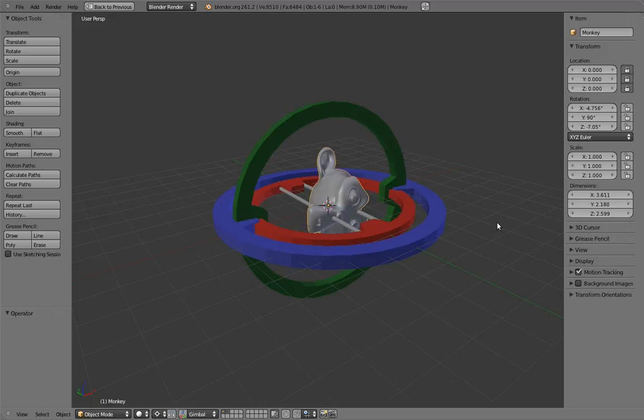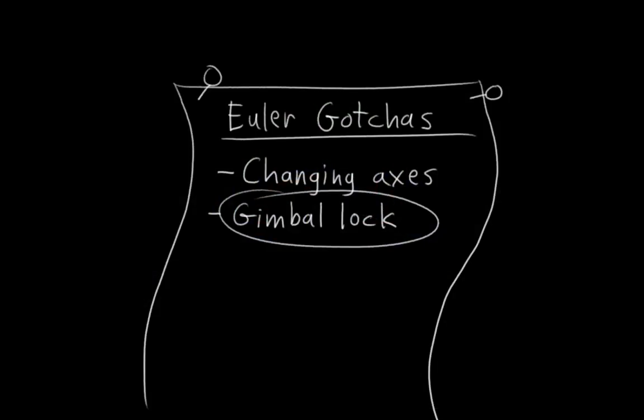This can result in some pretty strange behavior, especially with rotation interpolations, and animators generally ought to be aware of this possibility when animating and try to avoid rotations that get close to Gimbal Lock. So that's the second gotcha.